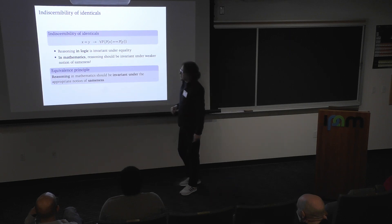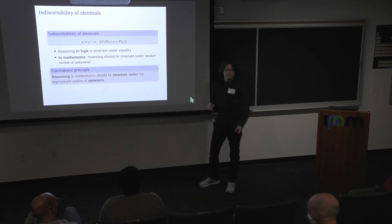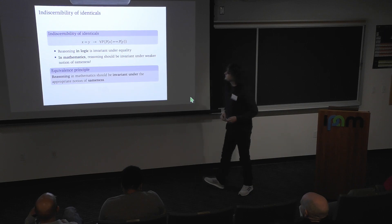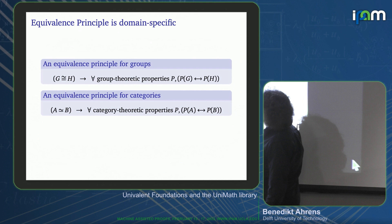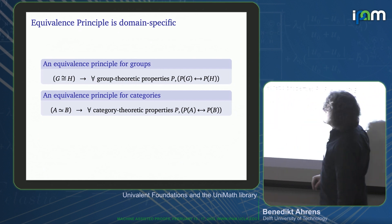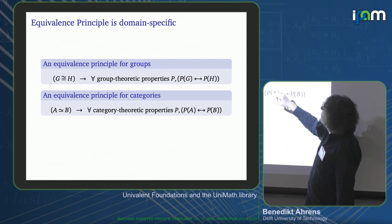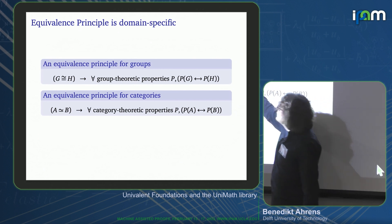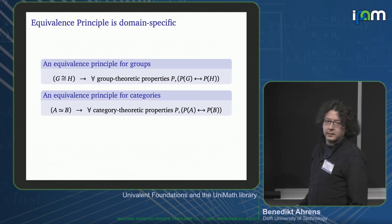What I will call the equivalence principle during this talk is the slogan: reasoning in mathematics should be invariant under the appropriate notion of sameness, where 'appropriate' means depending on what x and y are. For instance, if I study groups and I have two groups G and H that are isomorphic, then I want to consider properties that are invariant under isomorphism of groups — let me call these group-theoretic properties. These are the properties that a group theorist would study on groups.